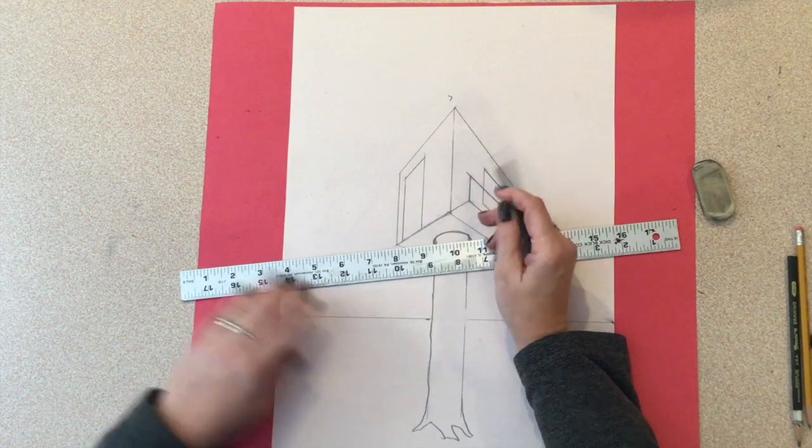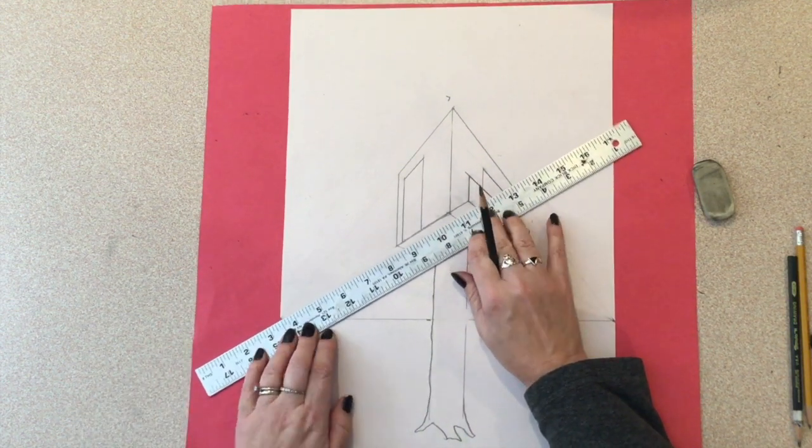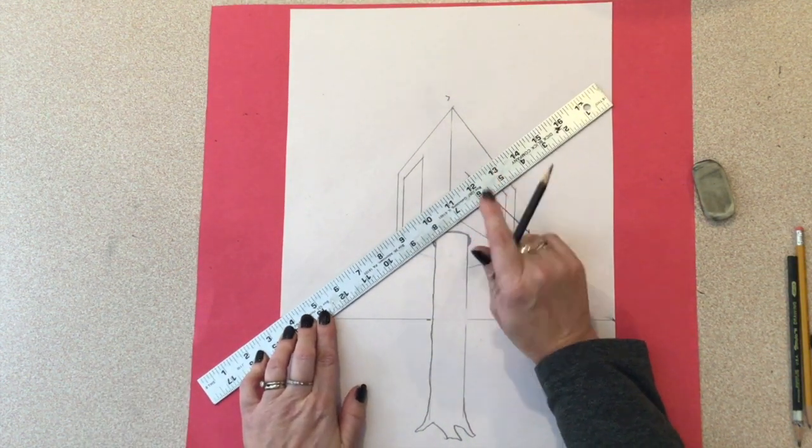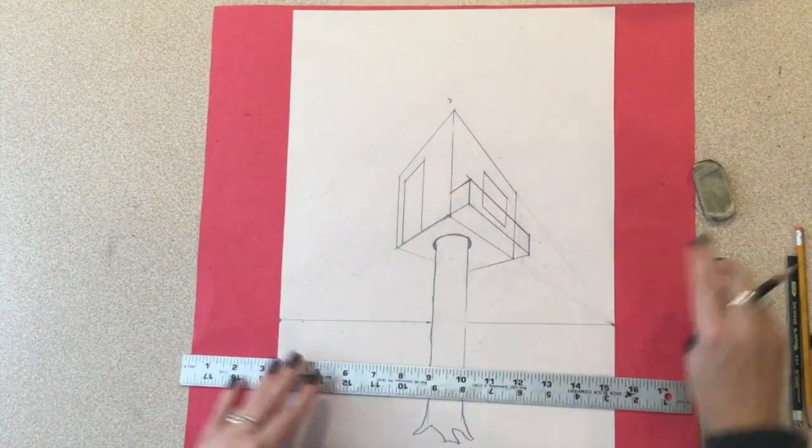To finish up the little side, I simply connect the vertical line on the left with an orthogonal line headed to the vanishing point on the left.